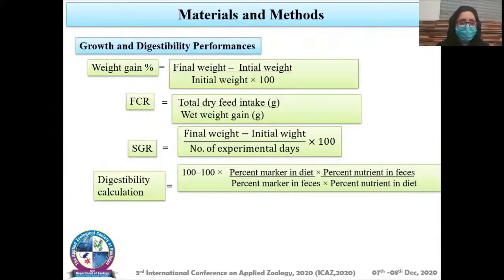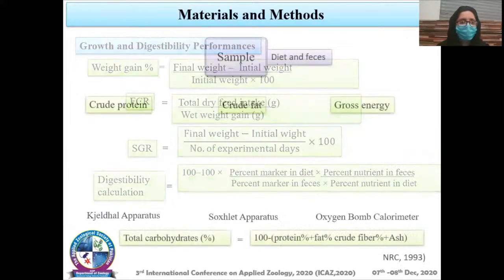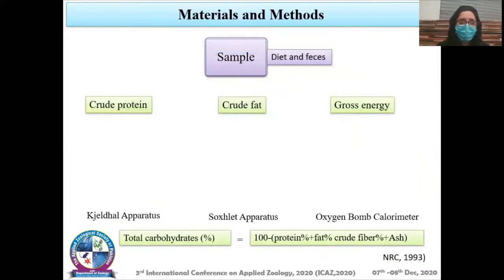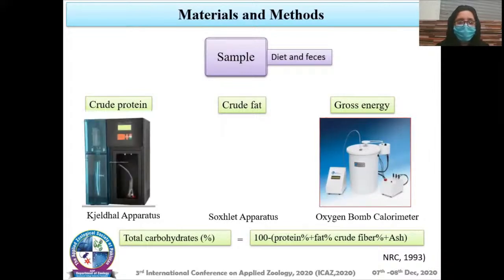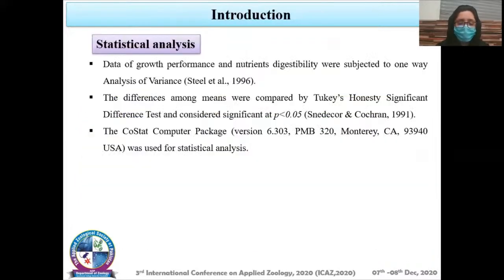Growth and digestibility performance formulas used were weight gain percentage, FCR (feed conversion ratio), and SGR (specific growth rate), as well as digestibility calculation formula. Analysis of feed and fish samples was done using: gross energy determined by oxygen bomb calorimeter, crude protein determined by Kjeldahl apparatus, and crude fat determined by Soxhlet apparatus. Data of growth performance and nutrient digestibility were subjected to one-way analysis of variance, with significant differences tested at probability less than 0.05 using Co-stat software.